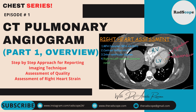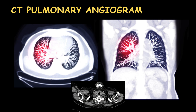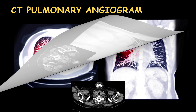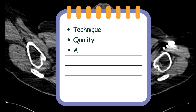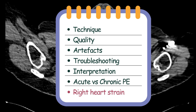Hello everyone. In this episode I'll share my approach to evaluate CT pulmonary angiogram to detect pulmonary embolism. Throughout this episode we will look at several cases to learn the technique for CT pulmonary angiogram, how to assess the quality of imaging for adequacy of interpretation, and examples of various artifacts that can affect scan quality and potentially make your interpretation suboptimal. We will learn about imaging protocols and parameters to help get rid of these artifacts.